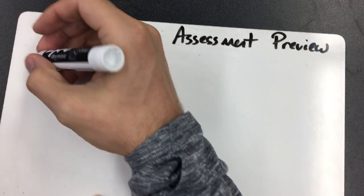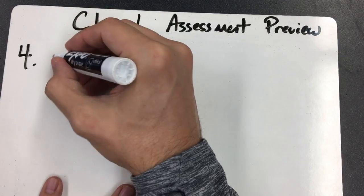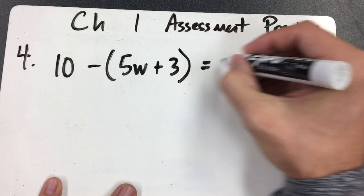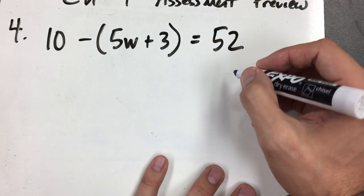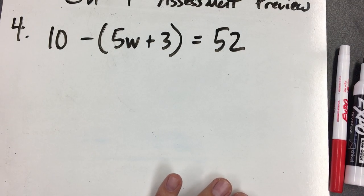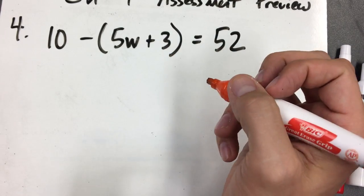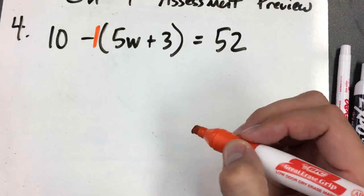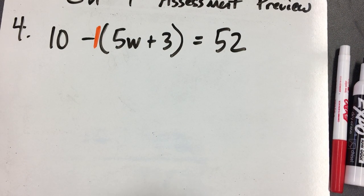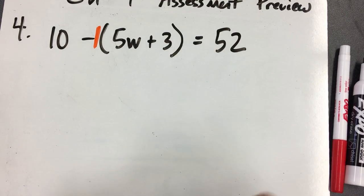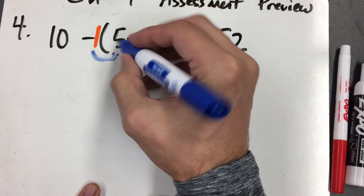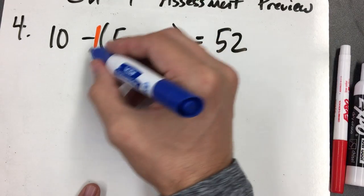Number 4 is your typical multi-step equation. This one has a tricky aspect: there's a parenthesis with just a negative sign in front, no number — but remember, that's an imaginary negative 1. I recommend writing these questions down on paper or a whiteboard rather than trying to solve them in your head just by looking at a computer screen. So write them down, and then distribute that negative 1.